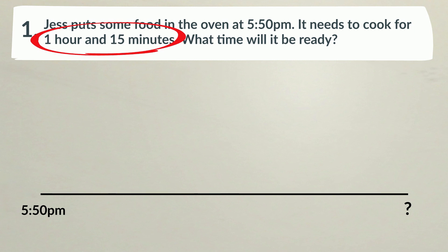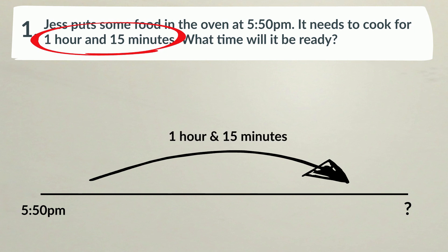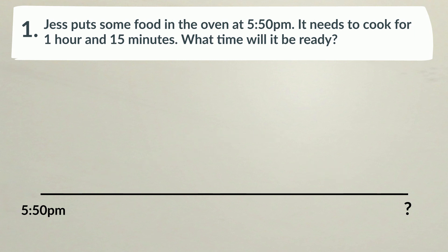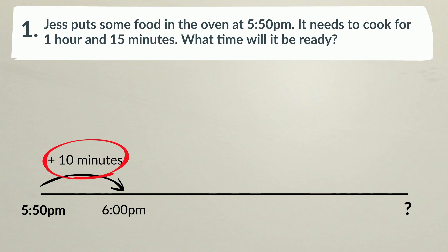To work out the end time, we have to jump a total of 1 hour and 15 minutes along this timeline. Doing this in one jump is a bit tricky, so instead we'll break it down into chunks of time that suit us. Let's start by jumping 10 minutes. That will bring us to exactly 6 o'clock. For each jump we make, we must record the elapsed time — here it is 10 minutes — and what time we land at after the jump, in this case 6 o'clock.